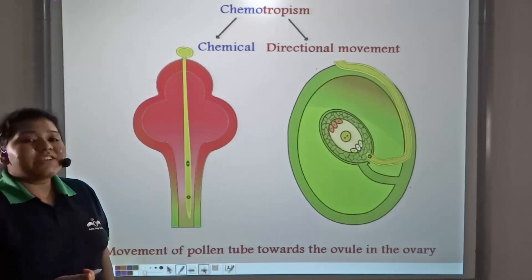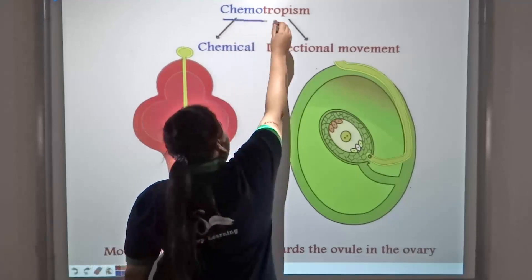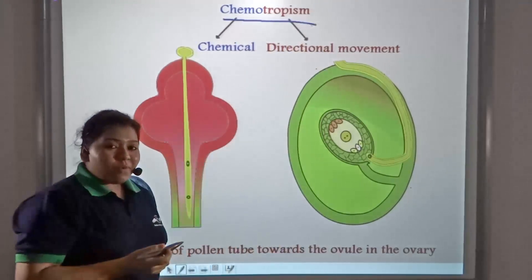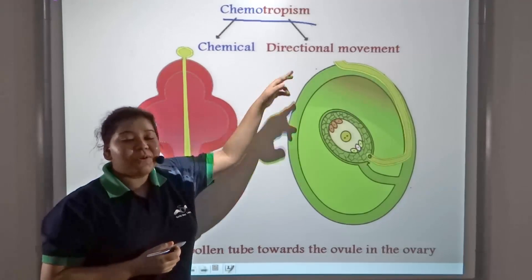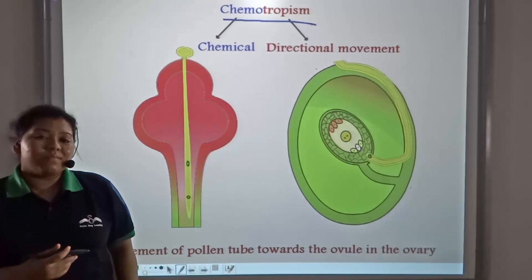This kind of directional movement is known as chemotropism, where chemo comes from the word chemical and tropism means directional movement.